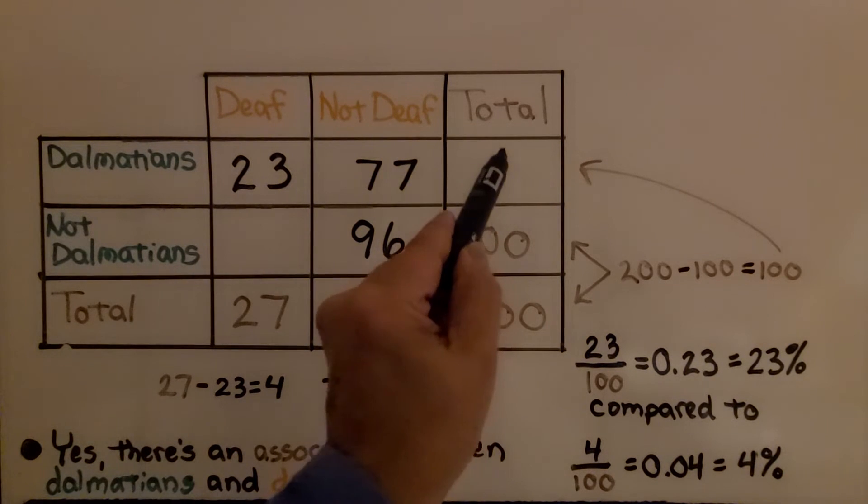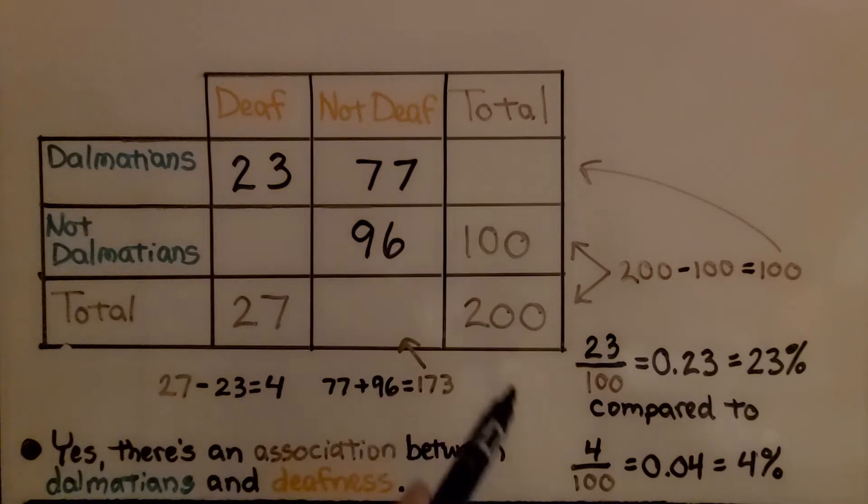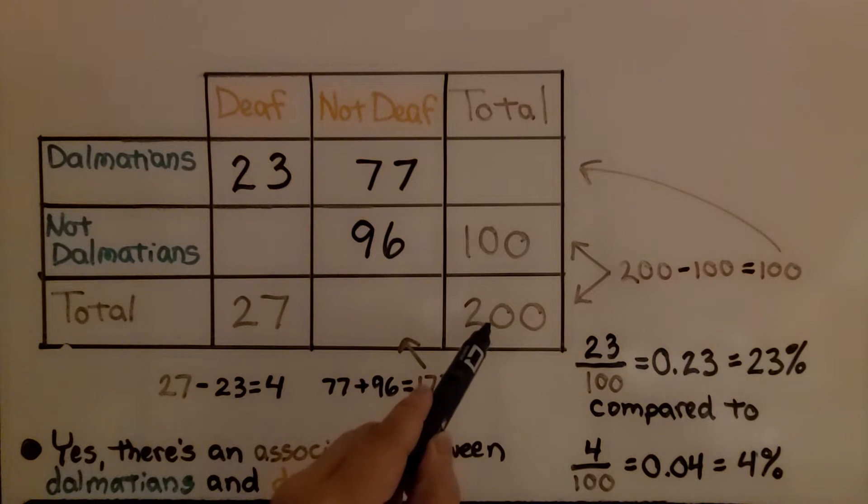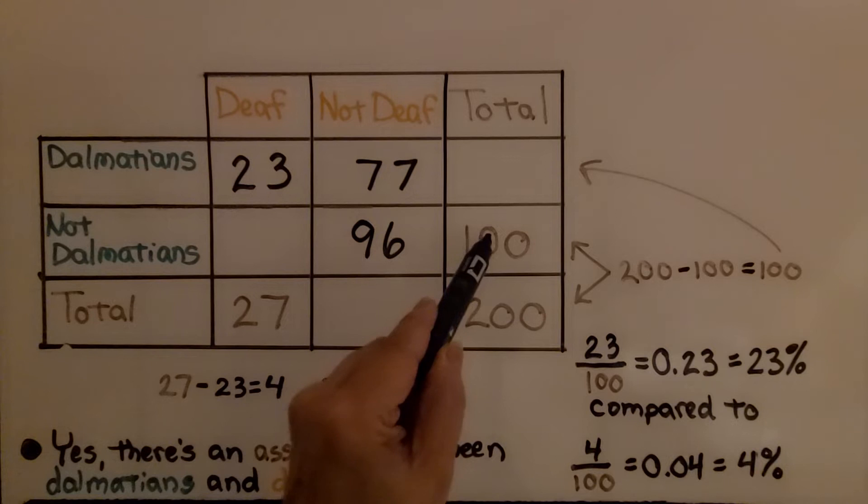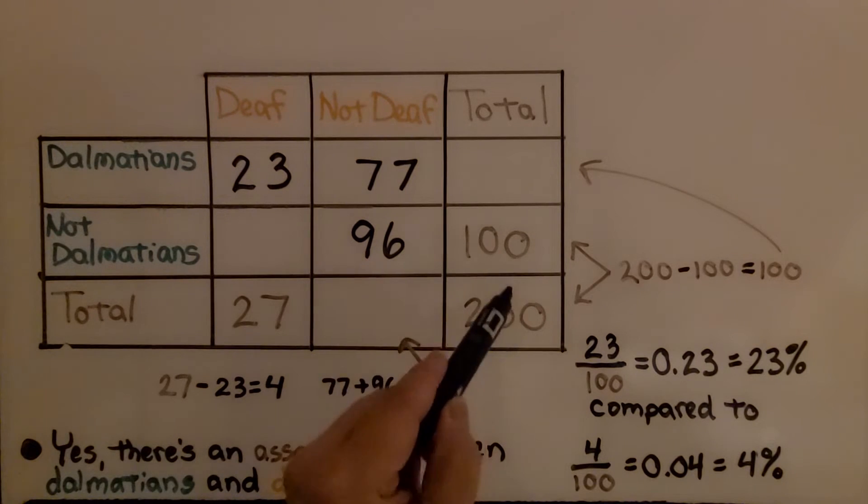Well, we can fill this out right now by taking the total 200 and subtracting the number of not Dalmatian dogs. Well, 200 minus 100 is 100. So we know this total is 100.